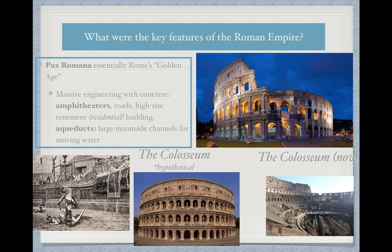In addition to political expansion, Rome saw all kinds of cultural and technological expansion. Pax Romana was essentially Rome's golden age — just like we've seen the Islamic golden age and the Chinese golden age. In a golden age, we see all kinds of engineering projects. The massive engineering would not have been successful without the use of concrete. Rome's use of concrete is what allowed them to build the architecture that still, to this day, can be found in many places.